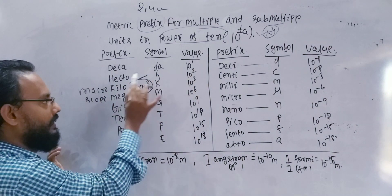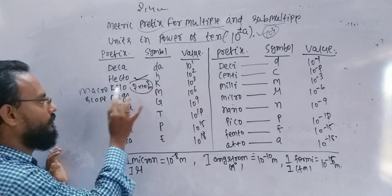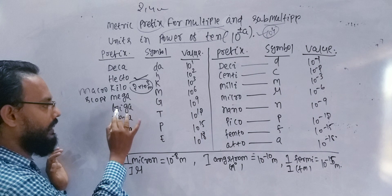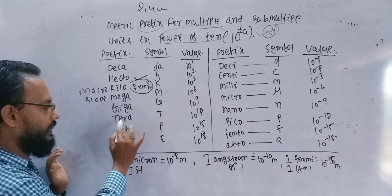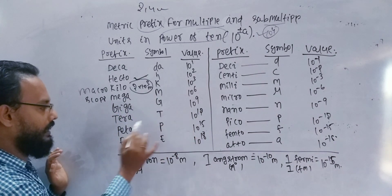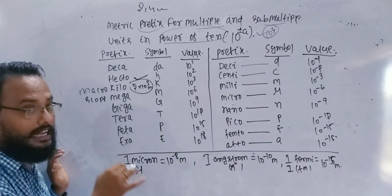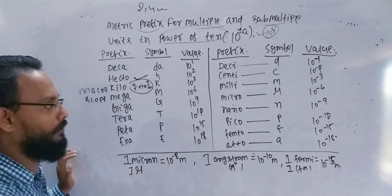The prefixes are: deca, hecto, kilo, mega, giga, tera, and further — these can be quite easily realized.